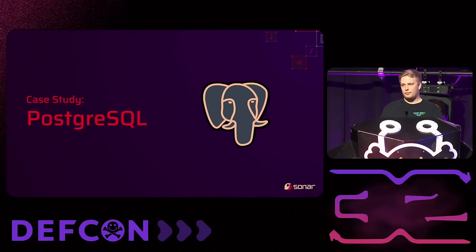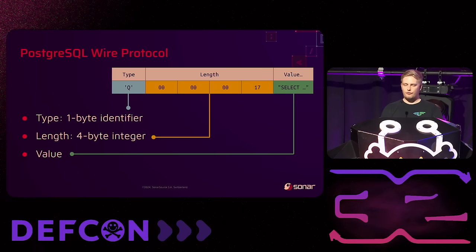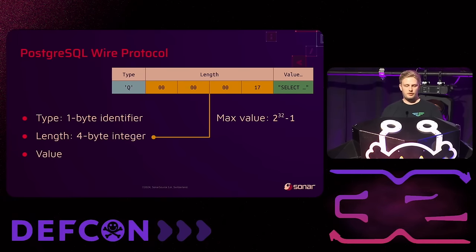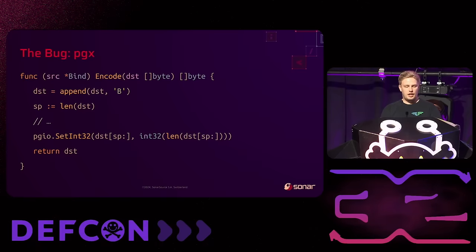Starting with Postgres: one byte type identifier, four-byte integer length field, then the value. I thought about that four-byte integer — you can fit numbers up to 2^32 minus 1, roughly four gigabytes. But what if we could make a query bigger than that? How do libraries handle this 'too large' case? I started looking into Postgres client library code and found the first bug.